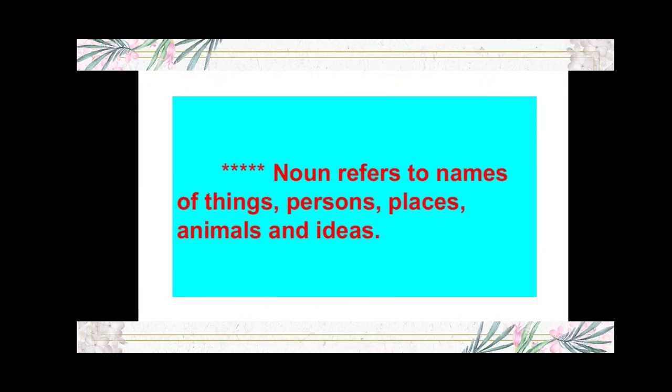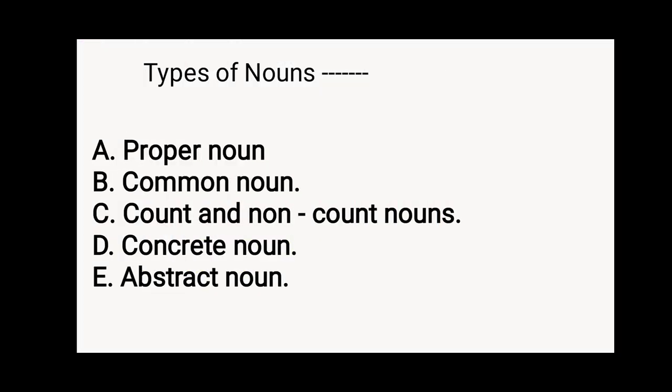In our last discussion, we got the definition of the noun, which refers to the names of things, persons, places, animals, and ideas. After that comes the different types of nouns. Nouns are mainly of five types: proper noun, common noun, count and non-count nouns. Out of these five types, we have already discussed the first three — proper noun, common noun, and count and non-count nouns. Now let us have a quick look at all three.